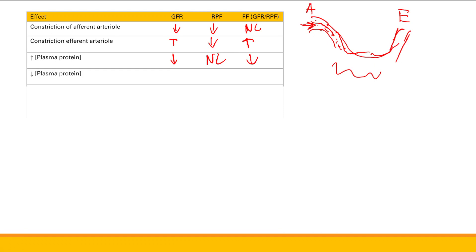What if you decrease plasma protein? It's the opposite: GFR goes up. Renal plasma flow again — no change. So filtration fraction goes up.